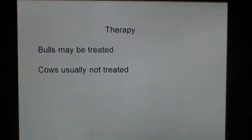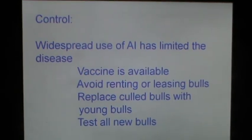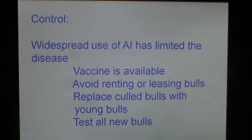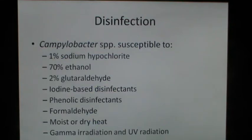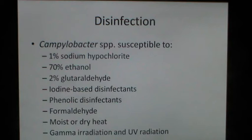Bulls may be treated and cows usually are not treated. Widespread use of artificial insemination has limited this disease — wherever artificial insemination is the only means of breeding, this disease has vanished, because of addition of antibiotics in the seminal extender which kills the organism. A vaccine is available. One must avoid renting or leasing bulls and replace old bulls with young bulls. All new bulls must be tested. Campylobacter species are susceptible to 1% sodium hypochlorite, 70% ethanol, 2% glutaraldehyde and iodine-based disinfectants, as well as phenolic disinfectants, formaldehyde, moist or dry heat, gamma irradiation and UV radiation.